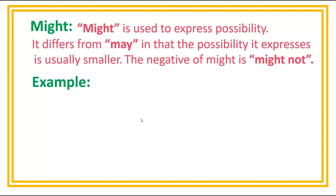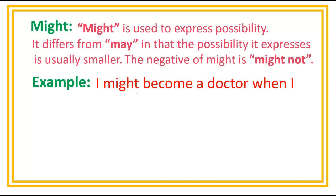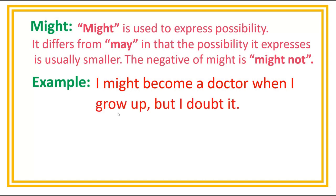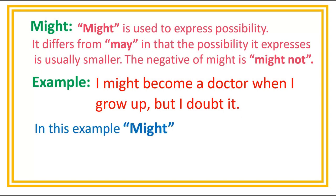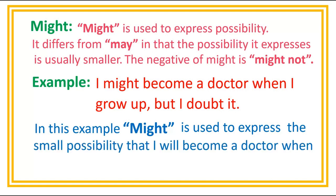Example: I might become a doctor when I grow up, but I doubt it. In this example, might is used to express the small possibility that I will become a doctor when I grow up.